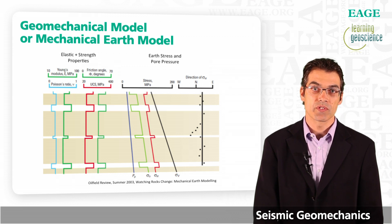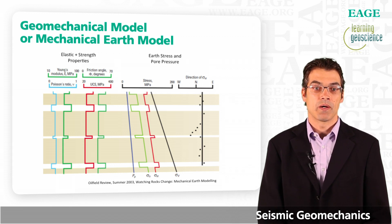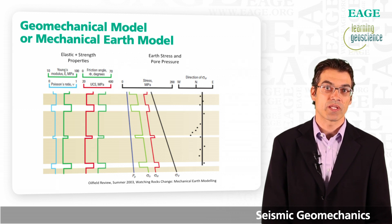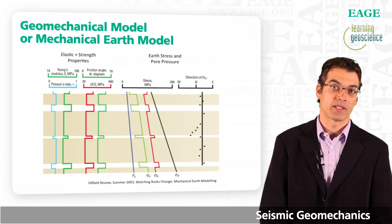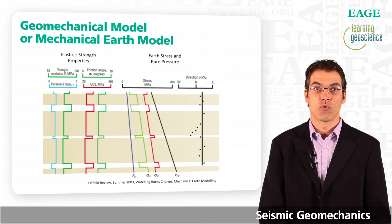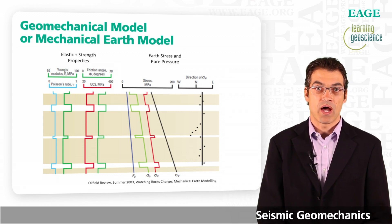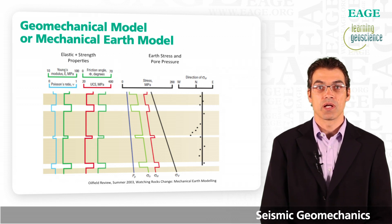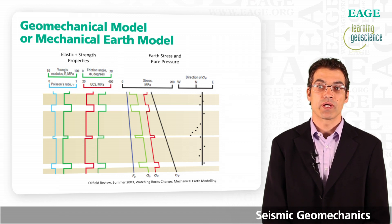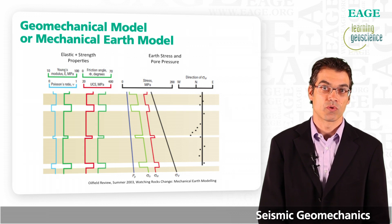This is very similar to a mechanical model used in civil engineering. If you plan and design a bridge, you need to understand the elastic and strength properties of the material — in that case steel — and you need to understand the loads, that is forces and stresses that act upon the structure. If you have a strong material, you need a larger stress to fail the bridge. In the same way, if you have a strong earth material, you will need larger stresses to fail it.